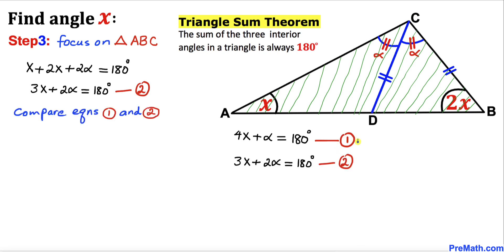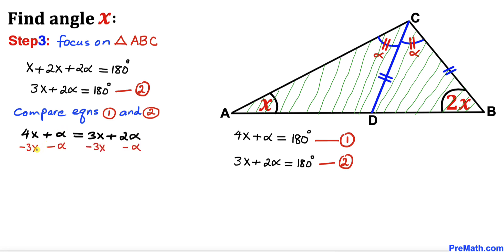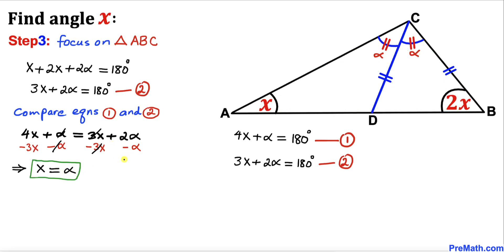Comparing Equations 1 and 2, since the right-hand sides are equal, we equate the left-hand sides: 4x + alpha = 3x + 2alpha. Subtracting 3x and alpha from both sides gives x = alpha.